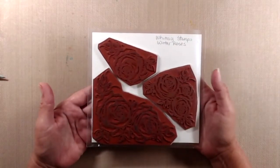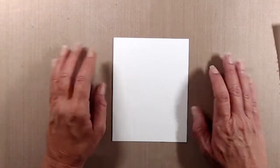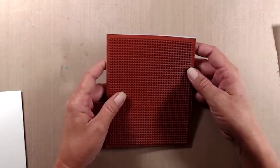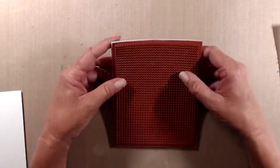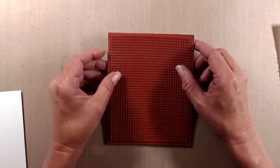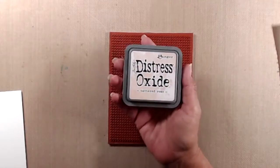The products that I'll be using today are the braided stamp set, the cross stitch hearts background stamp, and the winter roses background stamp. The winter roses background stamp does come as one big stamp but I cut it apart so that I could use the images separately.